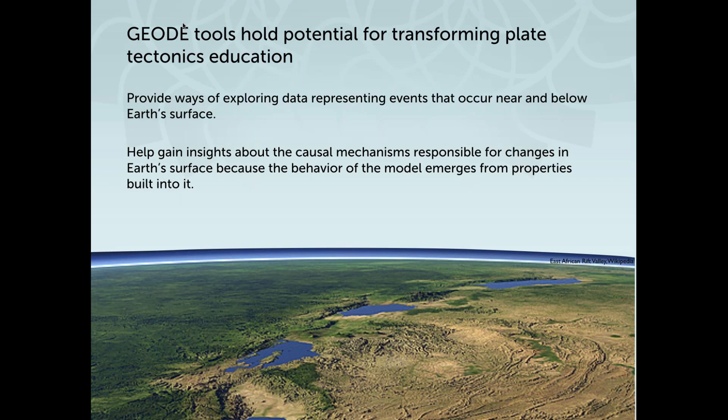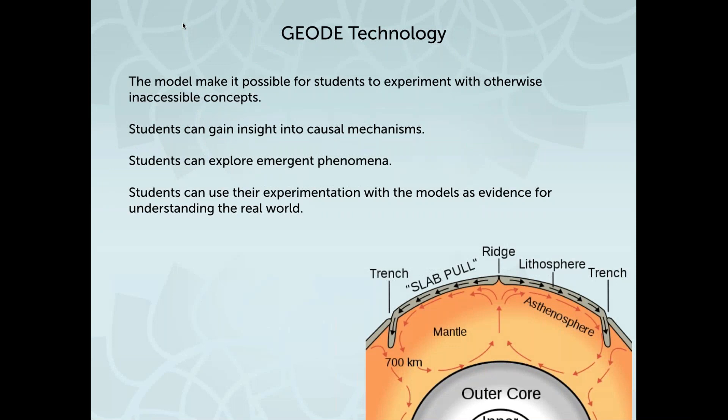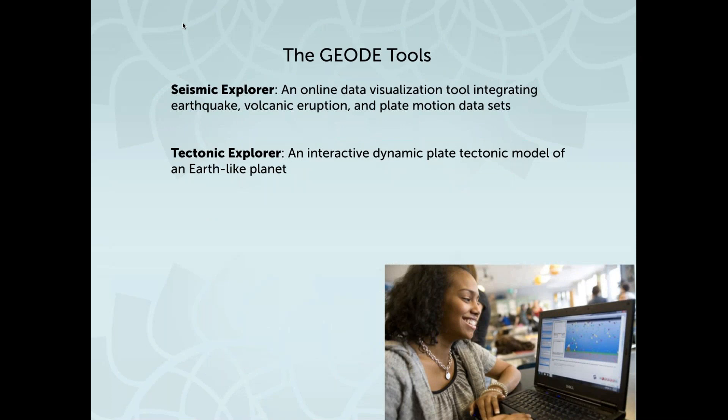They provide ways to explore data representing events that occur near the surface and below the earth's surface, and then help students gain insights about the causal mechanisms responsible for changes at earth's surface. The technology helps students experiment with otherwise inaccessible concepts. They get to gain insight themselves into the causal mechanism and then explore the emergent phenomena. The two tools I'll be talking about are Seismic Explorer, which is an online data visualization tool that integrates earthquake, volcanic eruption, and plate motion data sets, and the Tectonic Explorer, which is an interactive dynamic plate tectonic model of an earth-like planet. This tool is unique and new — we're in beta testing right now, so I'm excited to show you it.